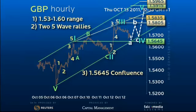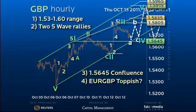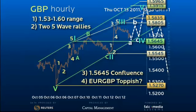Given our dollar view though, how is this possible? The answer might lie with EUR/GBP. But a loss of 1.5645 increases the threat of an early breakdown through the 1.5545 pivot to retest the 1.5270 consolidation lows.